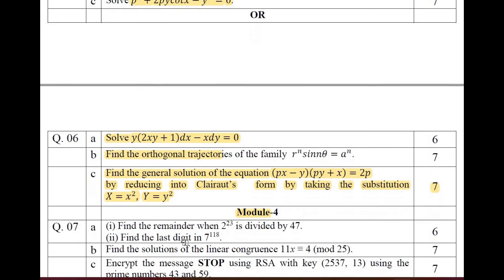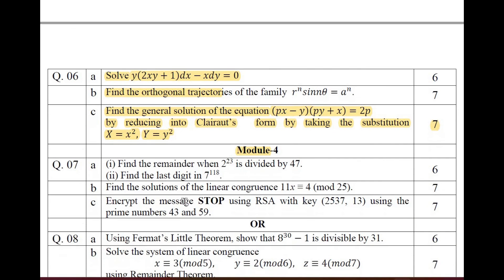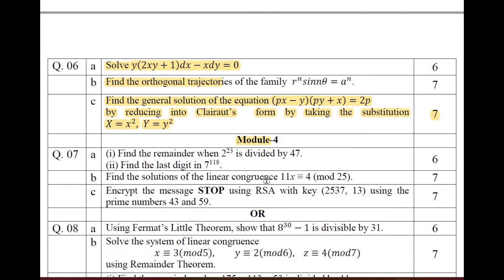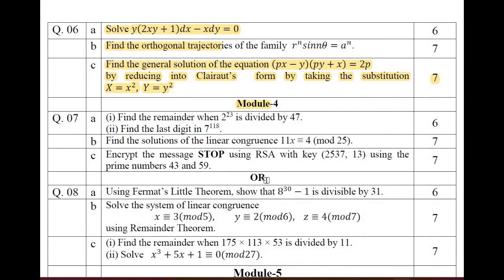Moving on to Module 4 of question paper 2 — modular arithmetic again. You can easily choose one problem on congruences, one on the remainder theorem, one on the Chinese remainder theorem, one on Fermat's little theorem, and problems on a system of linear congruences. This is the way you can choose questions from this module and answer easily.